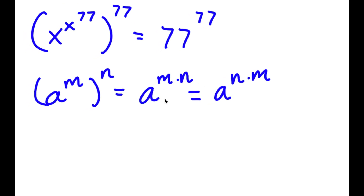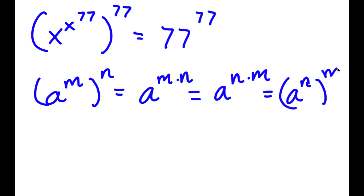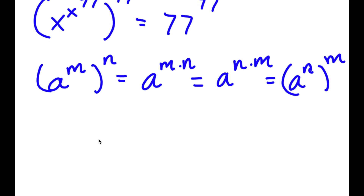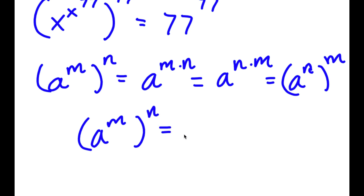So now, if a to the power of m times n equals a to the power of m to the power of n, then a to the power of n times m equals a to the power of n to the power of m. Because all of these equal each other, this means that a to the power of m to the power of n equals a to the power of n to the power of m.